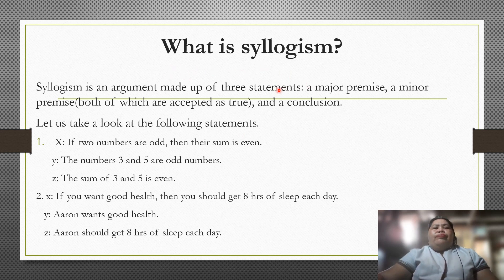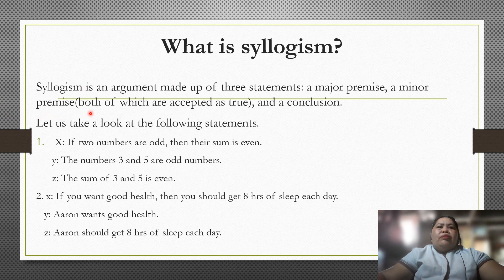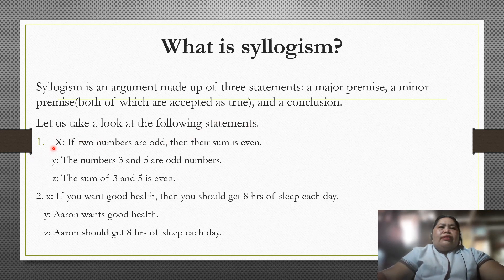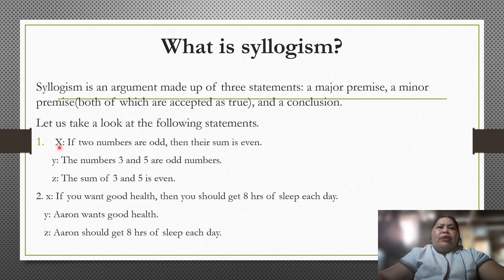Now, what is syllogism? Syllogism is an argument made up of three statements: a major premise, a minor premise — both of which are accepted as true — and a conclusion. For example: X — if two numbers are odd, then their sum is even; Y — the numbers 3 and 5 are odd numbers; Z — the sum of 3 and 5 is even. X is the major premise (general statement), Y is the minor premise, and Z is the conclusion.